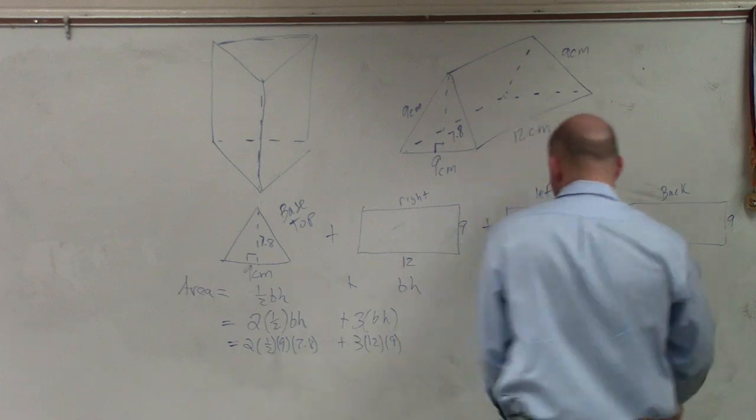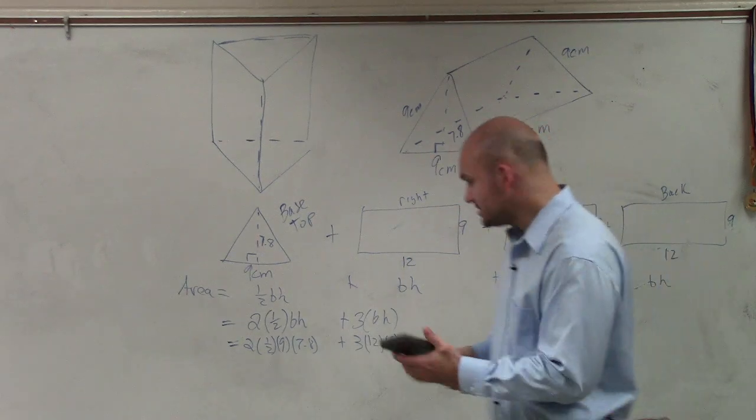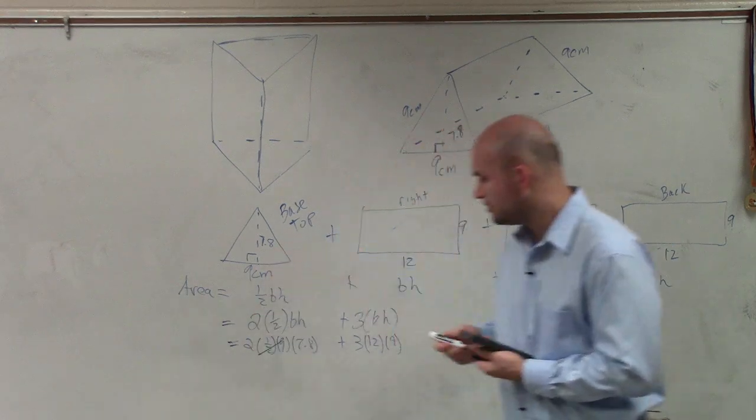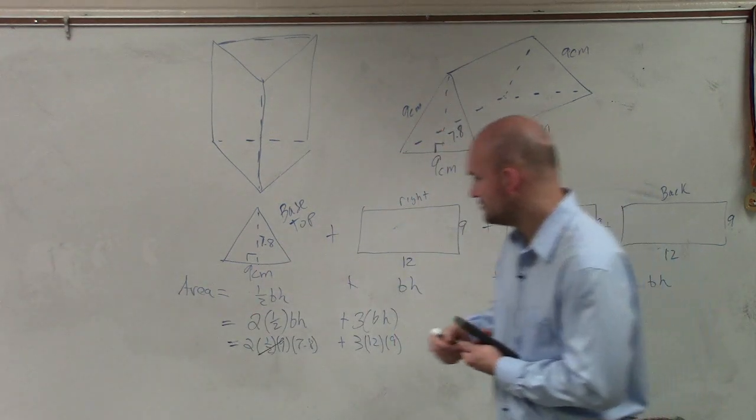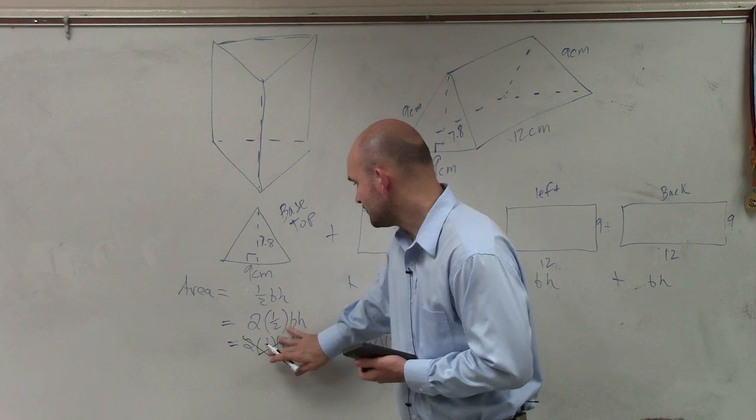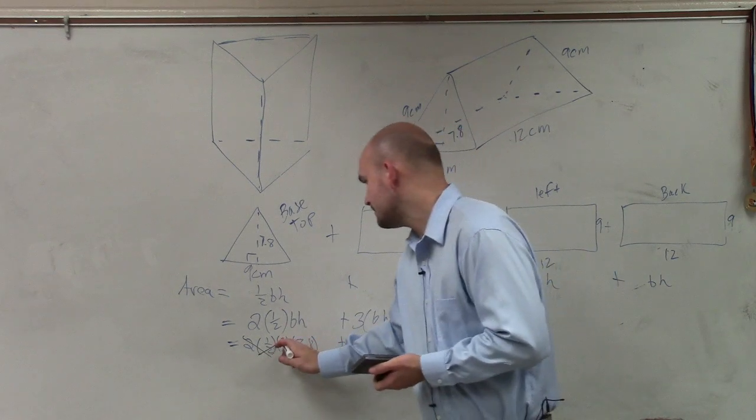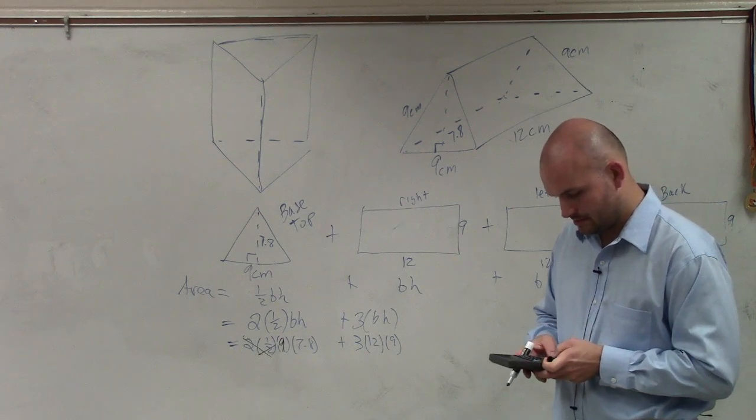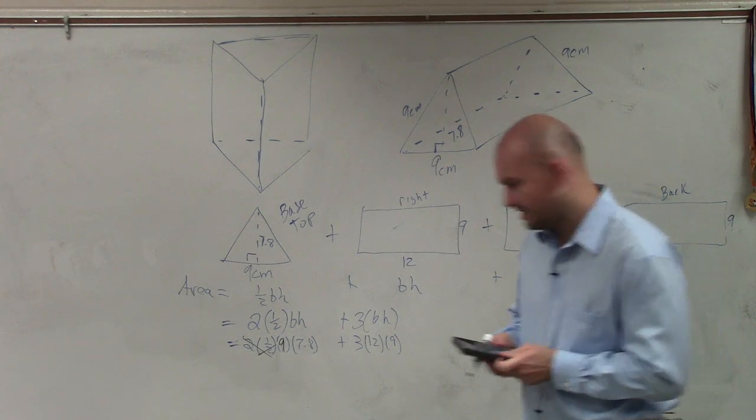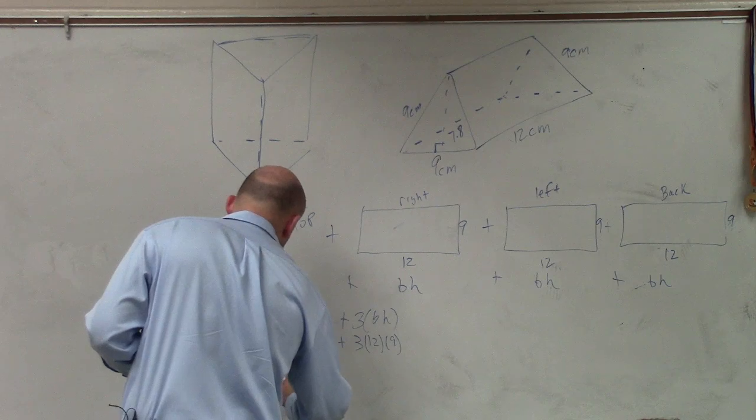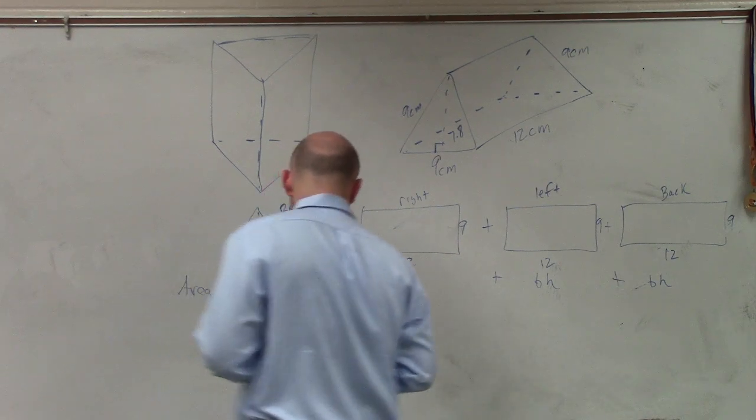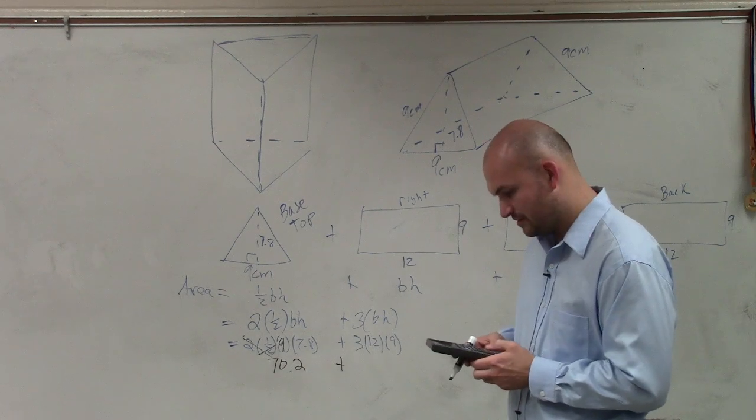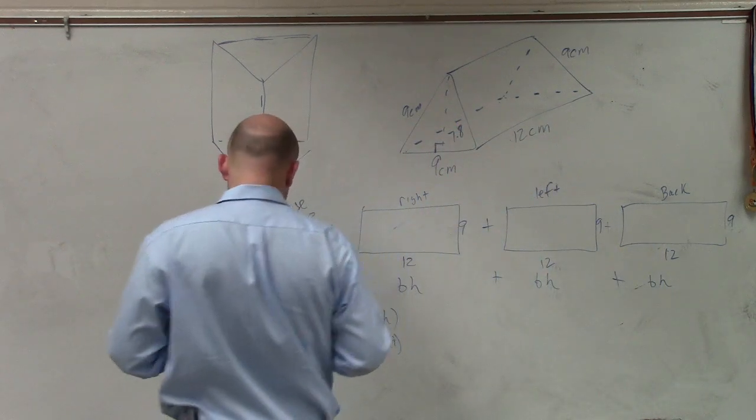So now I just take my handy dandy calculator. Now notice that 2 times 1/2, that just goes to 1, or multiplies to 1. We still have the 9. So I do 9 times 7.8, that gives me 70.2, plus 3 times 9 times 12, is 324.